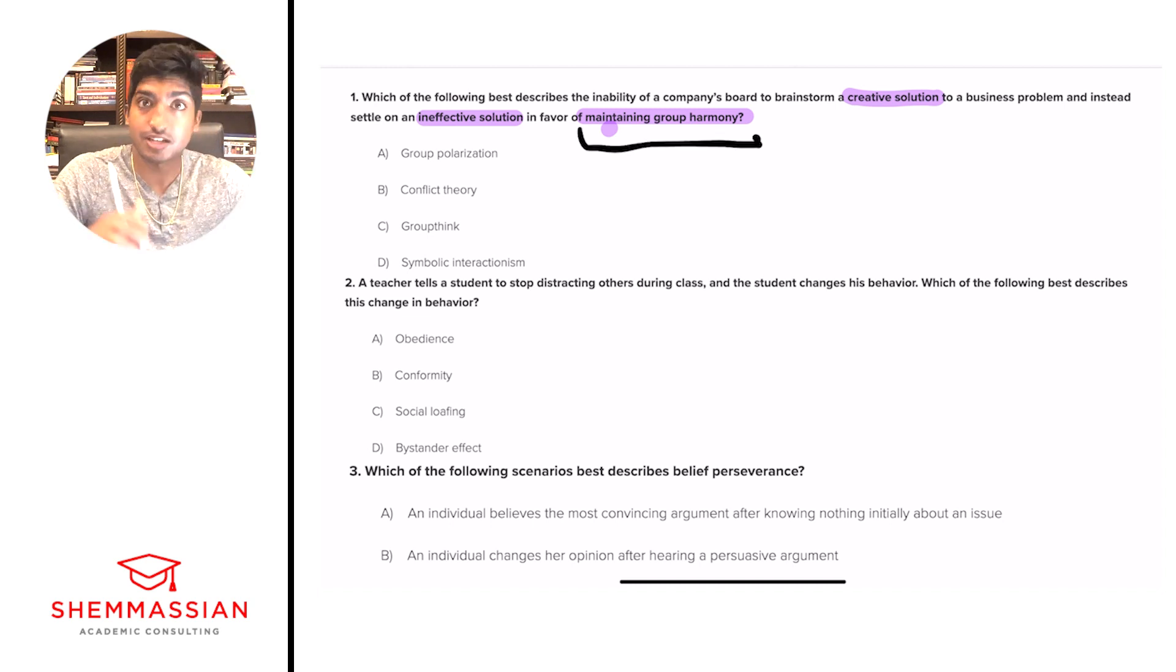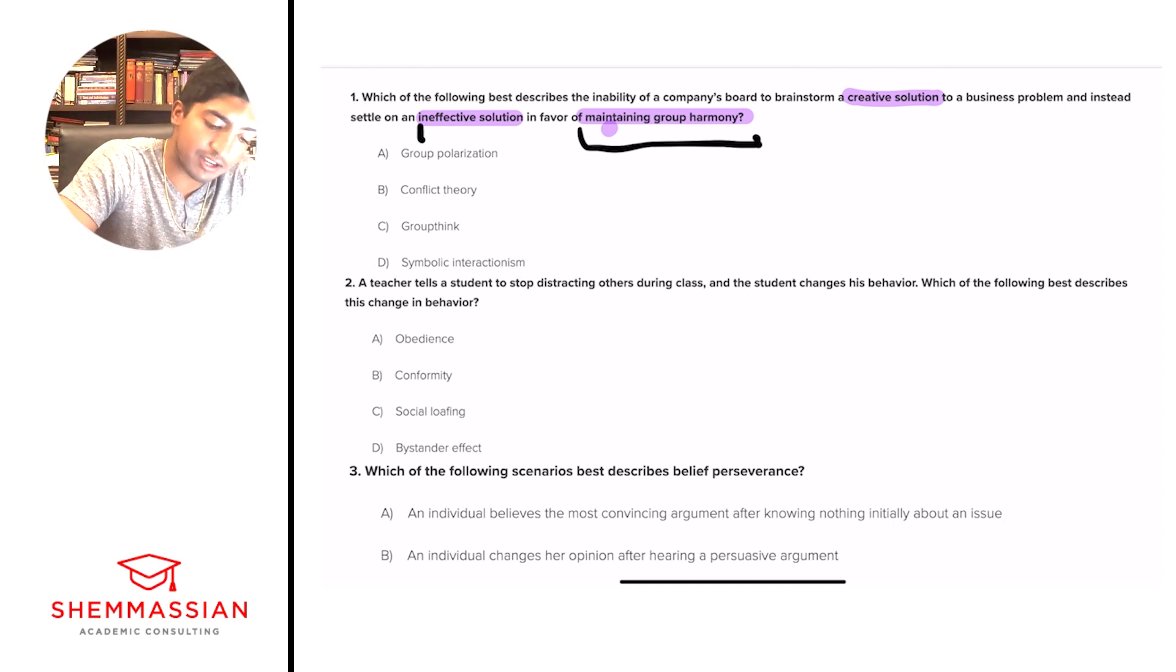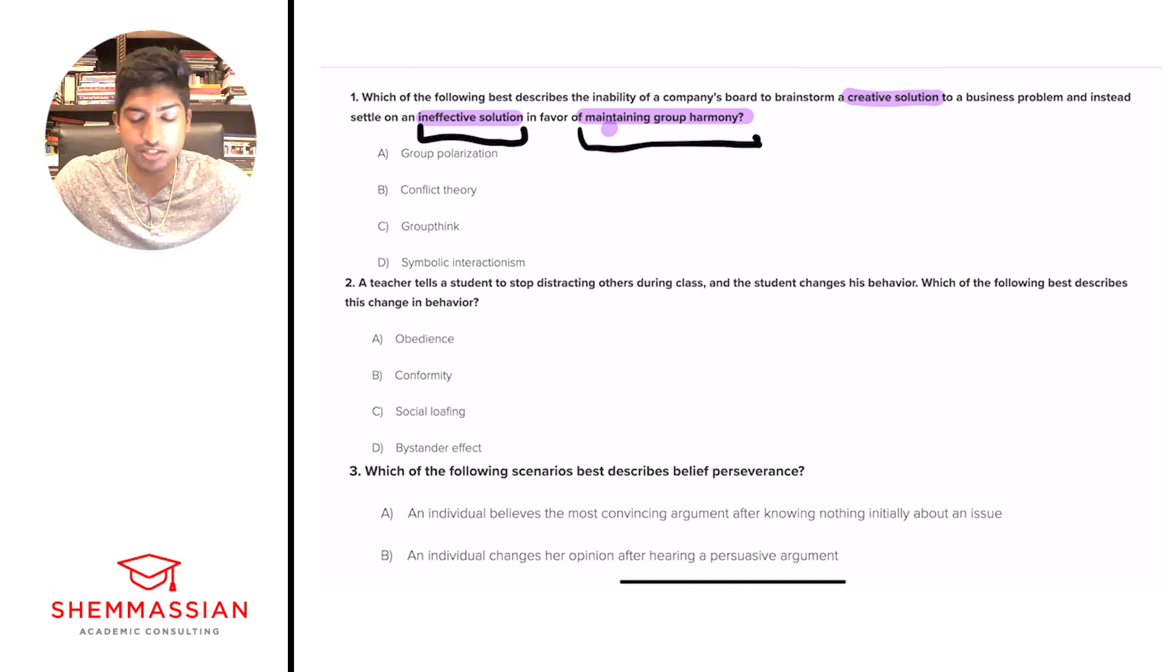In this case, we have a board that's unable to create a creative solution and they come up with an ineffective solution. Ineffective solution over a creative solution in favor of maintaining group harmony. Once we see maintaining group harmony, there's something we should think—they're just trying to maintain peace instead of creating any conflict. If you're trying to work as a team and maintain harmony and prioritize harmony over creating an effective solution, that's the definition of groupthink. Groupthink is when you're prioritizing being together as a community, like less friction between the team, and you oftentimes will not come to an effective solution because you're limiting your answers to things that will maintain the harmony.